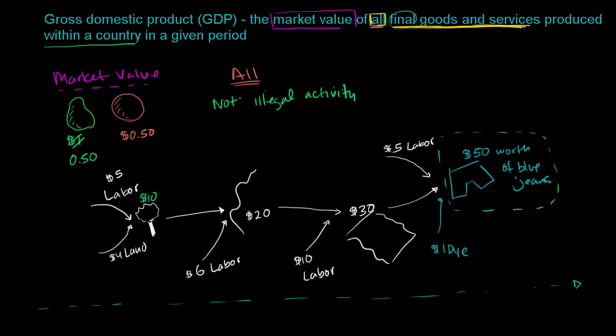Now this last part of it is produced within a country. And this is, you might have heard GNP, gross national product, and that's the main difference. GDP says, if we talk about, let's say we're talking about the United States, GDP says if it was produced inside the country, we don't care who it was produced by.